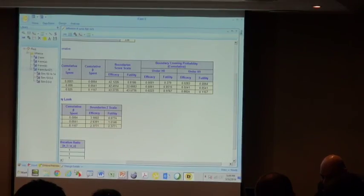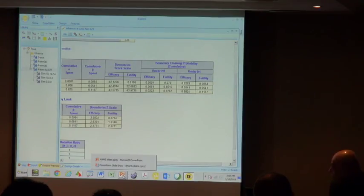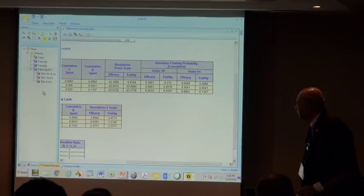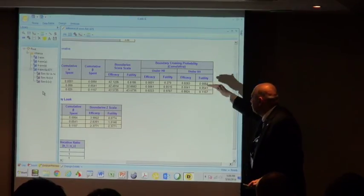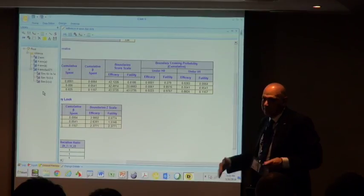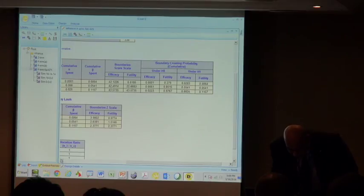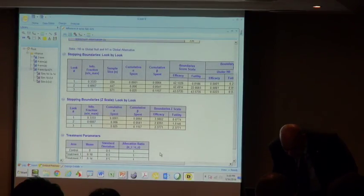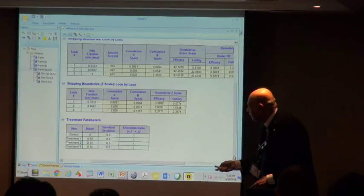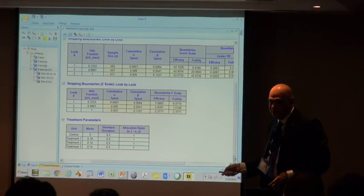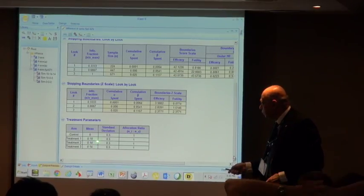Now what we would like to do is investigate further the properties of this design which has an efficacy boundary and a futility boundary. What we want to know is how often will you drop losers along the way? What will happen look by look? Then you might want to also investigate what will happen look by look with this design if you have some different values for the treatment effects. For example, if only one treatment was active and the other two were completely inactive.